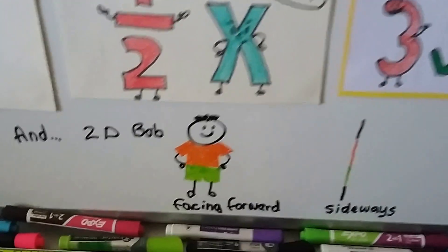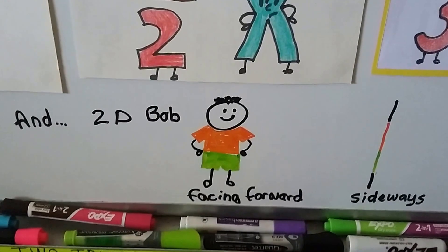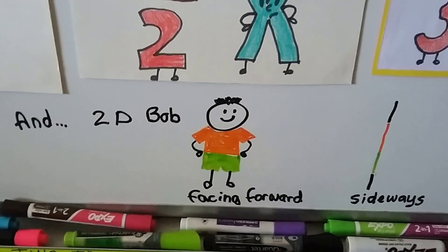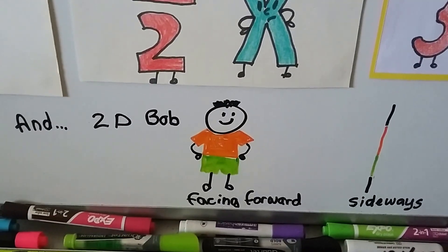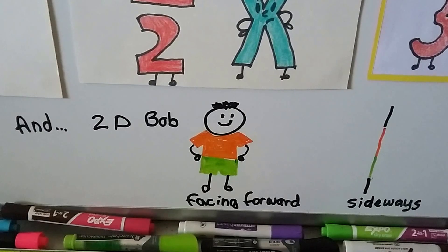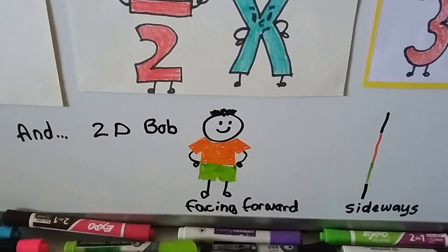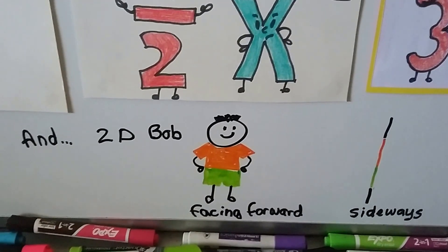There's one last character we can't forget about, and that's 2D Bob. When he's facing forward we can see him, but when he turns sideways, he's just a straight line.